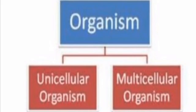Microorganisms are of two types: Unicellular Organism and Multicellular Organism. Microorganisms having a single cell are unicellular, e.g. bacteria and virus. Multicellular microorganisms have many cells, e.g. fungus and algae. Some microorganisms like fungus that grow on bread or strands of algae in a pond are multicellular. However, most microorganisms such as bacteria and viruses are unicellular.